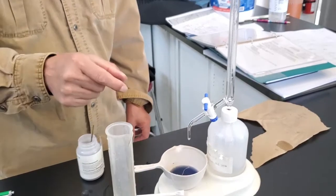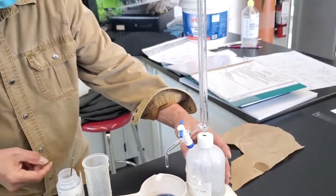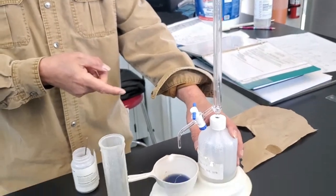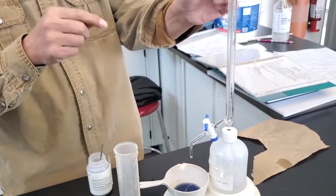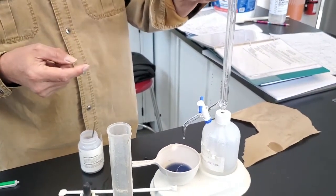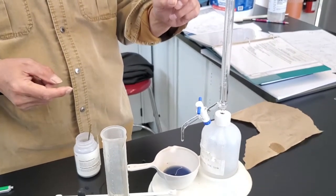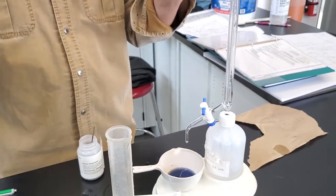You titrate this with the hardness titrant. Okay. And then, after the indicator changes color, you just read the burette. Whatever you see, one ml is one part per million. Okay. So the multiplier for this is one. Okay. Thank you.